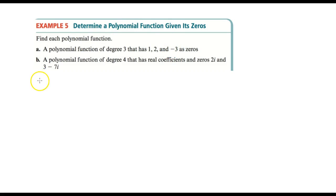So if 1 is a zero, then that tells us that one of the factors is x minus 1. I'm working out part A here. And if 2 is a zero, then that tells us that x minus 2 is a factor of the polynomial.